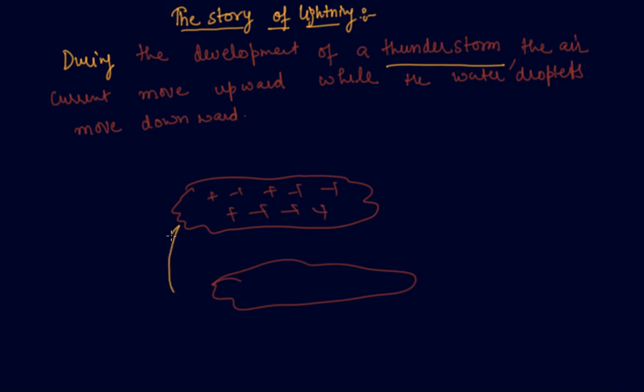The air current moves upwards while the droplets move downwards. So with the help of this phenomena, a positive charge accumulates on the clouds above, and the negative charge accumulates near the lower edges. These are the lower edges and these are upper edges.